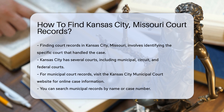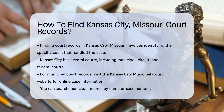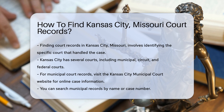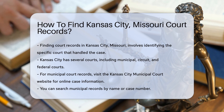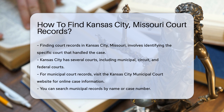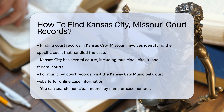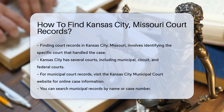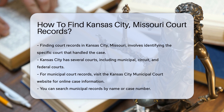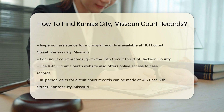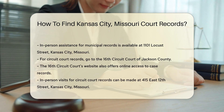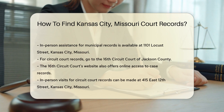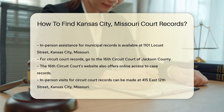The first step is to identify the specific court that handled the case. Kansas City is served by several courts, including municipal, circuit, and federal courts. For municipal court records, you can visit the Kansas City Municipal Court website. They provide access to case information online, and you can search by name or case number. If you prefer in-person assistance, you can visit the court located at 1101 Locust Street, Kansas City, Missouri.